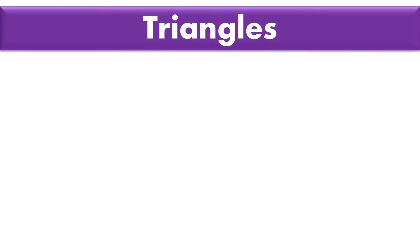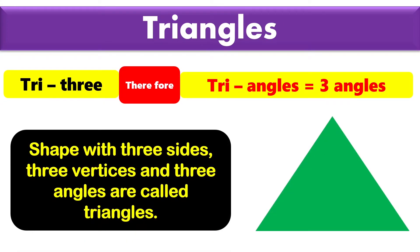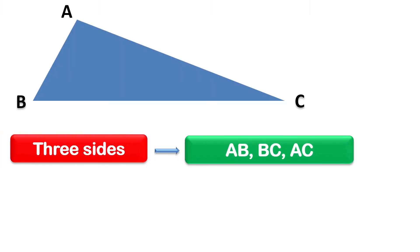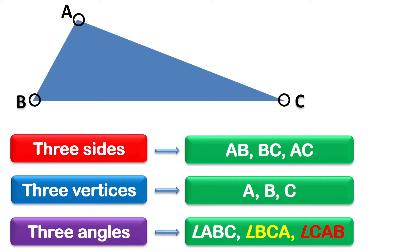Today's topic is Triangles. Tri means three, therefore triangles means three angles. This is a shape with three sides, as you can see in the picture. A triangle has three sides — AB, BC, and AC — three vertices — A, B, and C — and three angles: angle ABC, angle BCA, and angle CAB.